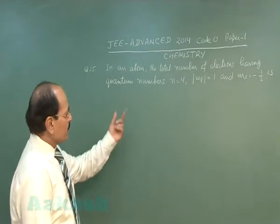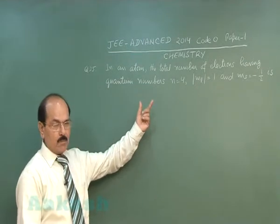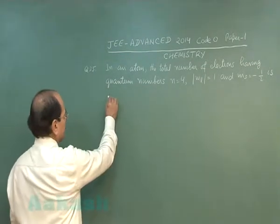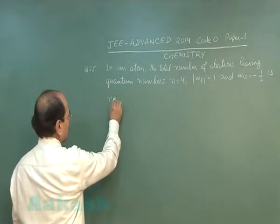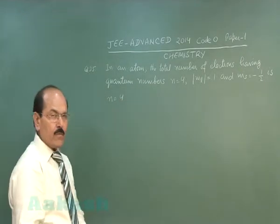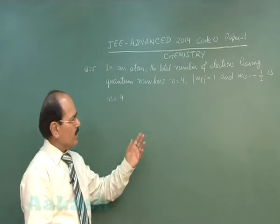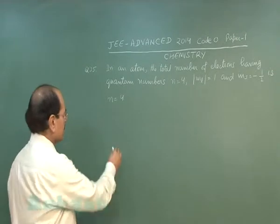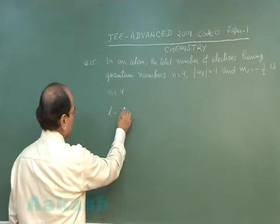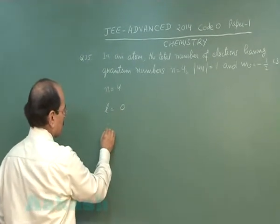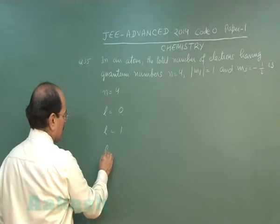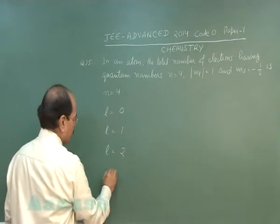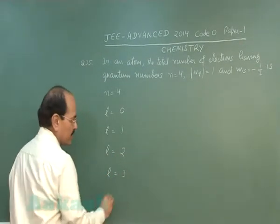If the principal quantum number of an atom is 4, the azimuthal quantum number can have 4 values: that is 0, 1, 2, and 3.